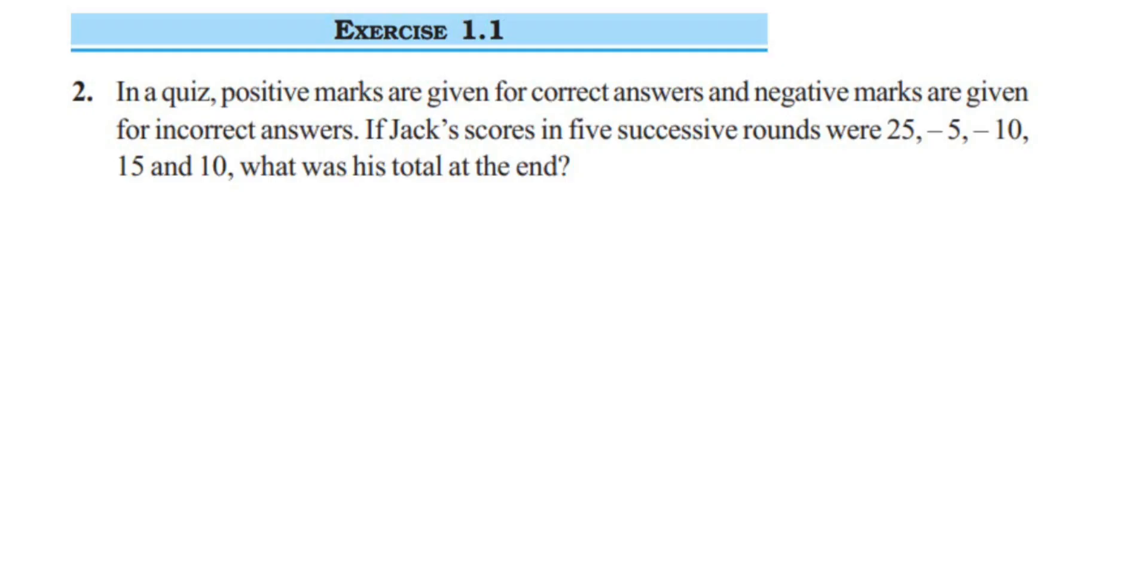Hey everyone, here is a question from the integers chapter of class 7, and this is the second question of exercise 1.1. The question is: In a quiz, positive marks are given for correct answers and negative marks are given for incorrect answers. If Jack's scores in five successive rounds were 25, -5, -10, 15, and 10, what was his total at the end?